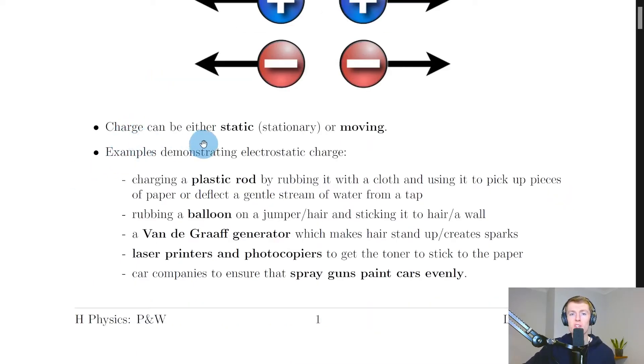Moving on, charge can be either static, stationary, or moving. We actually saw moving charges, electrons, when we looked at circuits within the electricity topic. Whereas in this section, we're more interested in charges building up on objects rather than moving in electrical circuits. So we're going to be looking more at static charge.